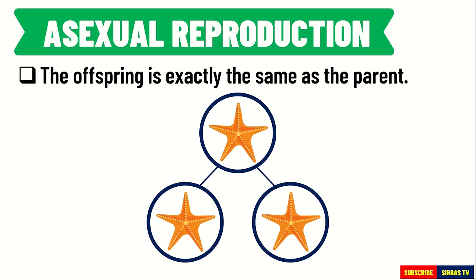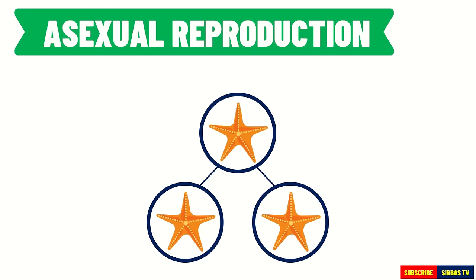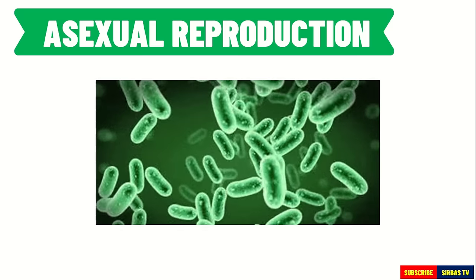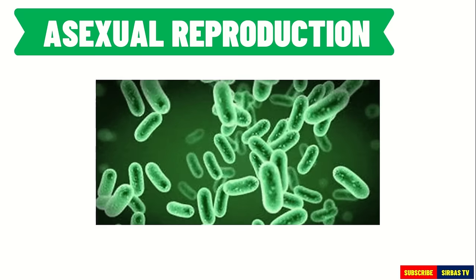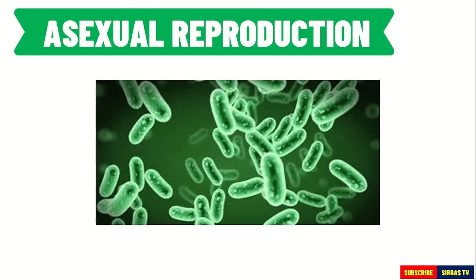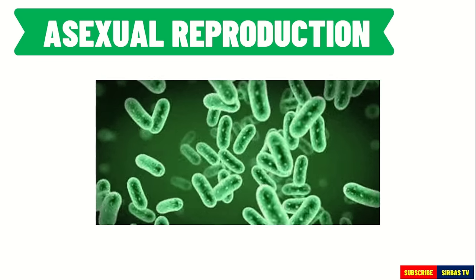Compare the appearances of the offspring to their parent's starfish. This is because in asexual reproduction, the genetic makeup of the offspring is the same as the parent. Take a look at the colony of bacteria. What can you observe on their appearance? Correct! They are exactly alike with each other because they reproduce asexually.